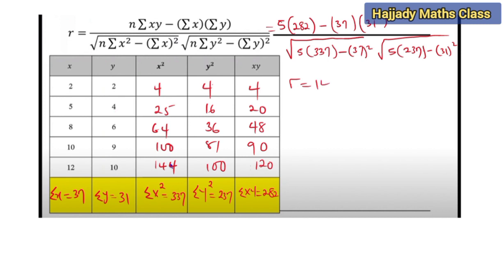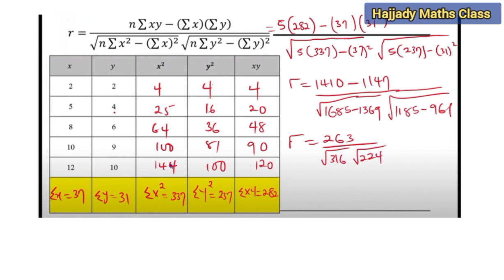So solving this, my r is going to give me 1410 minus 1147 over square root of 1685 minus 1369 times square root of 1185 minus 961. The value of my r is going to be 263 over square root of 316 times square root of 224. Approximately, my r is going to be 0.99.